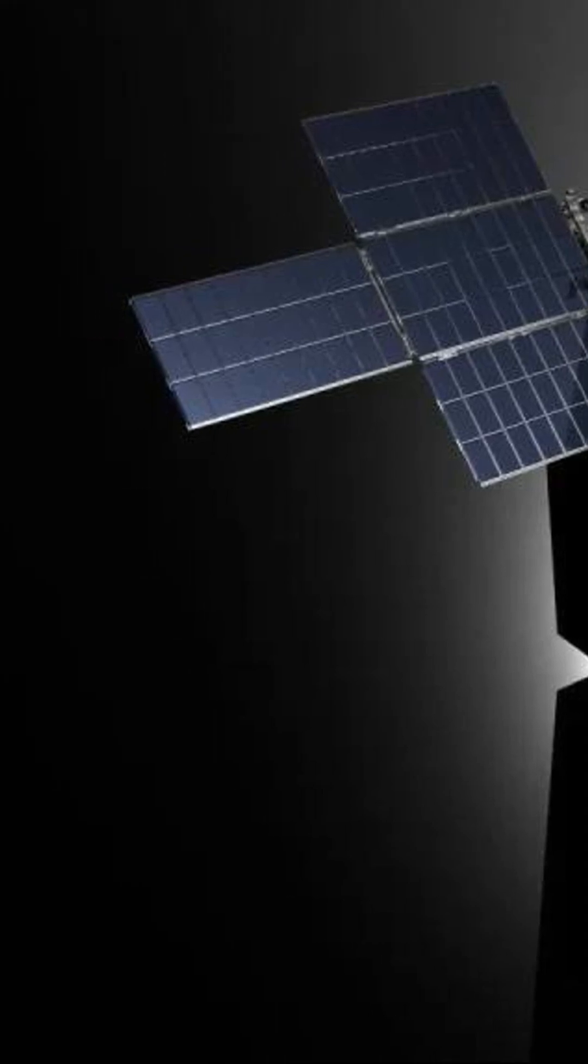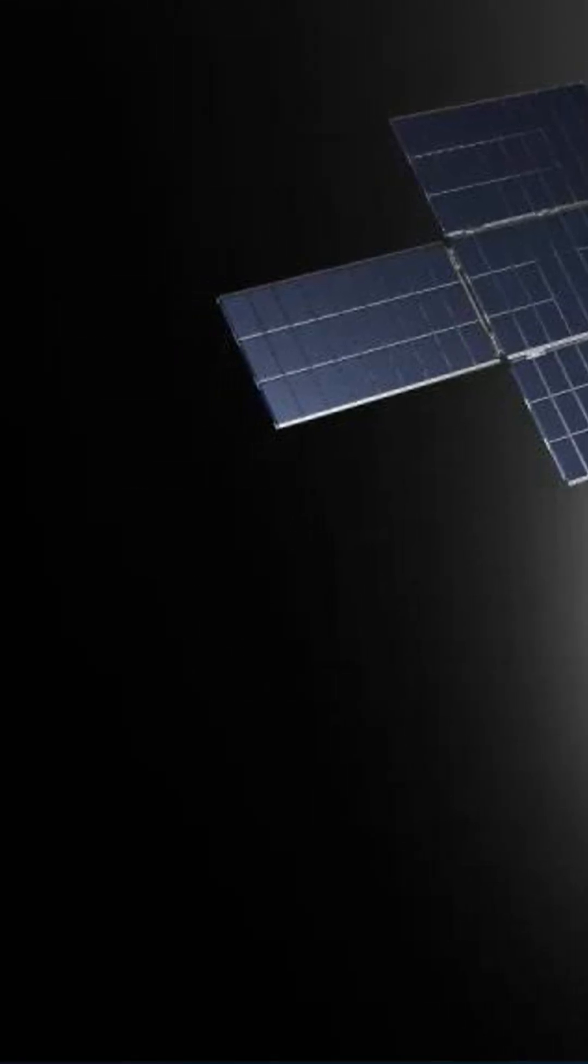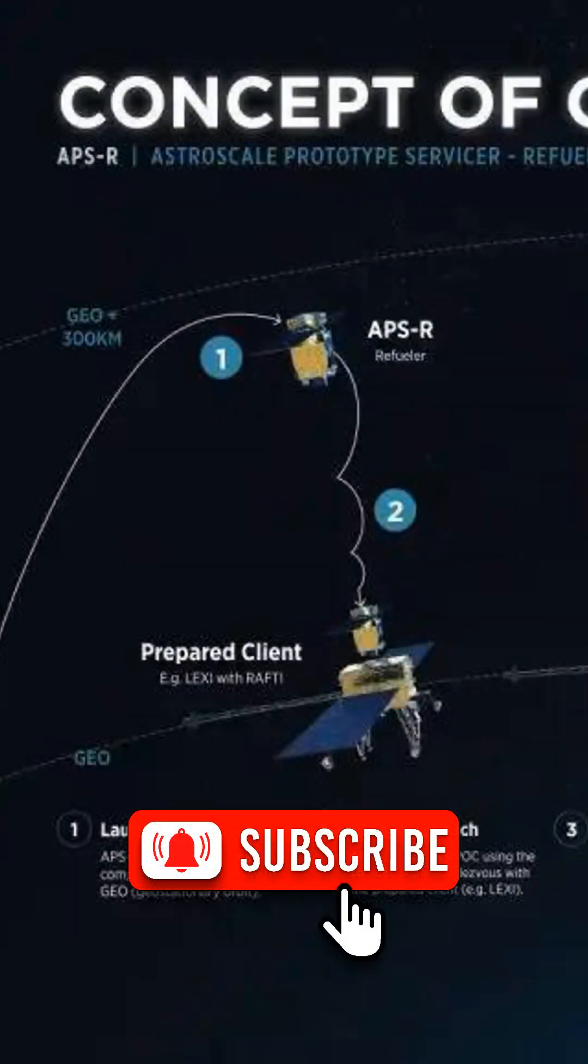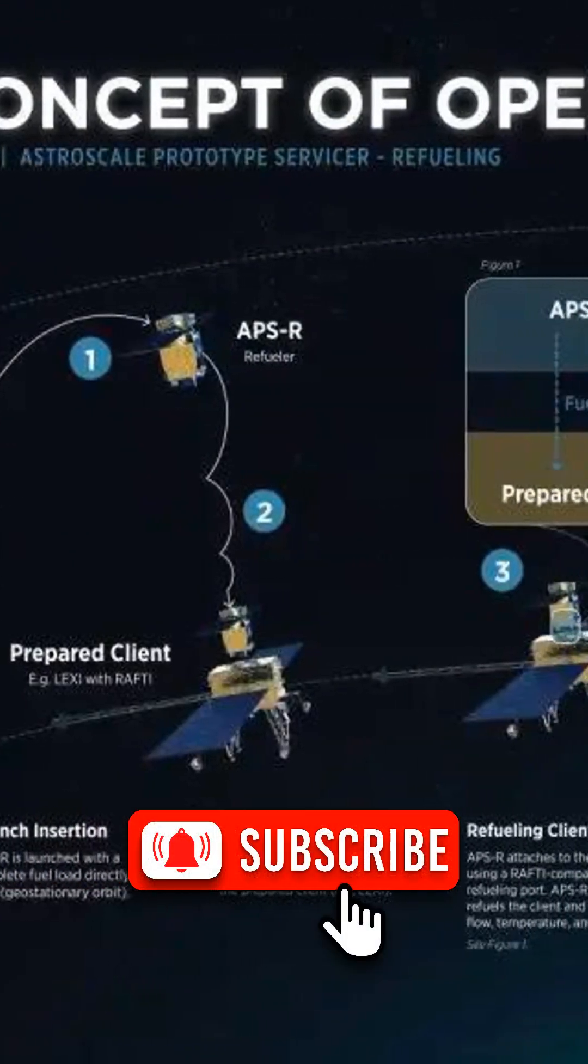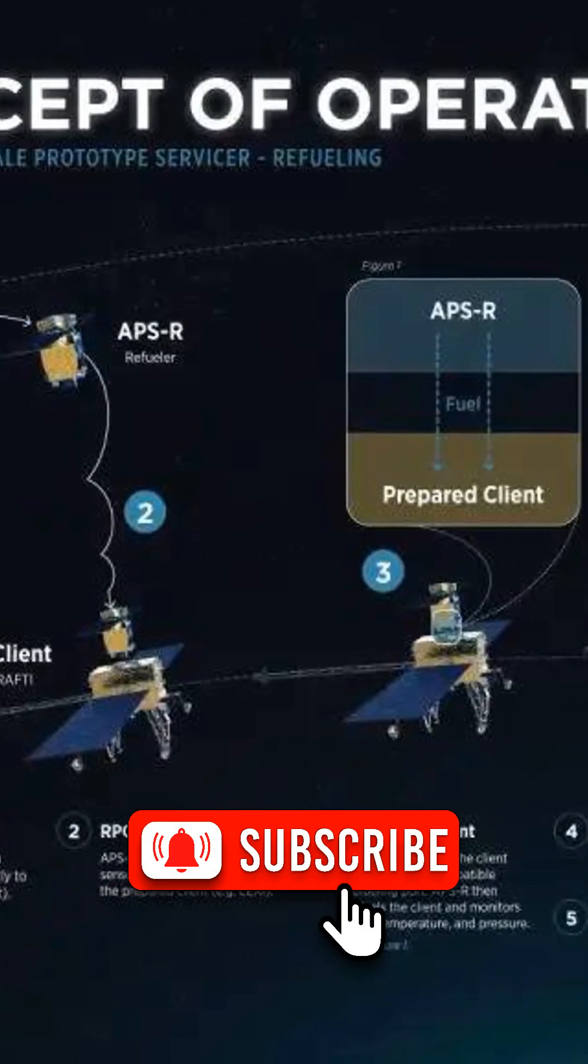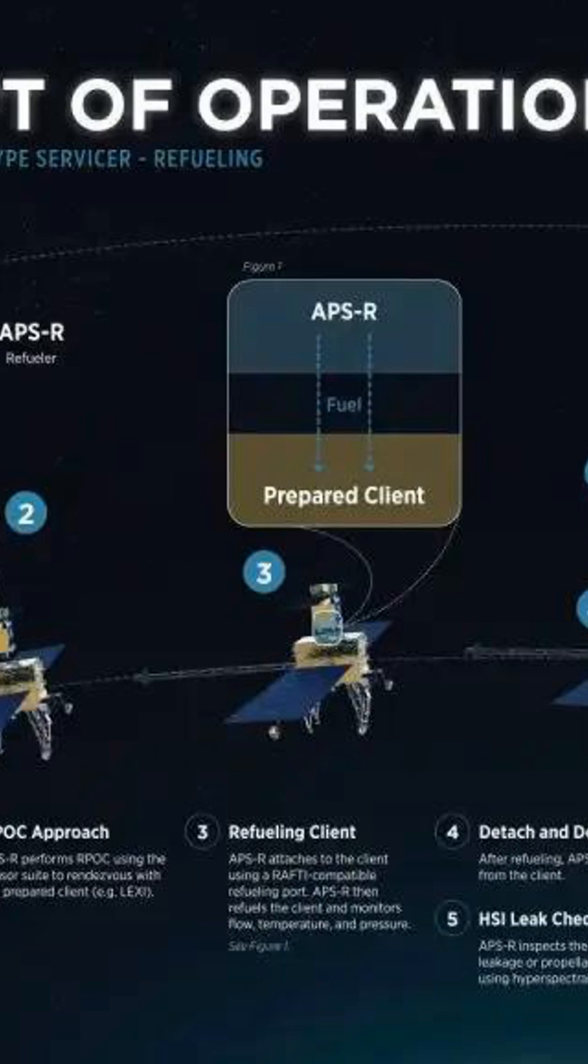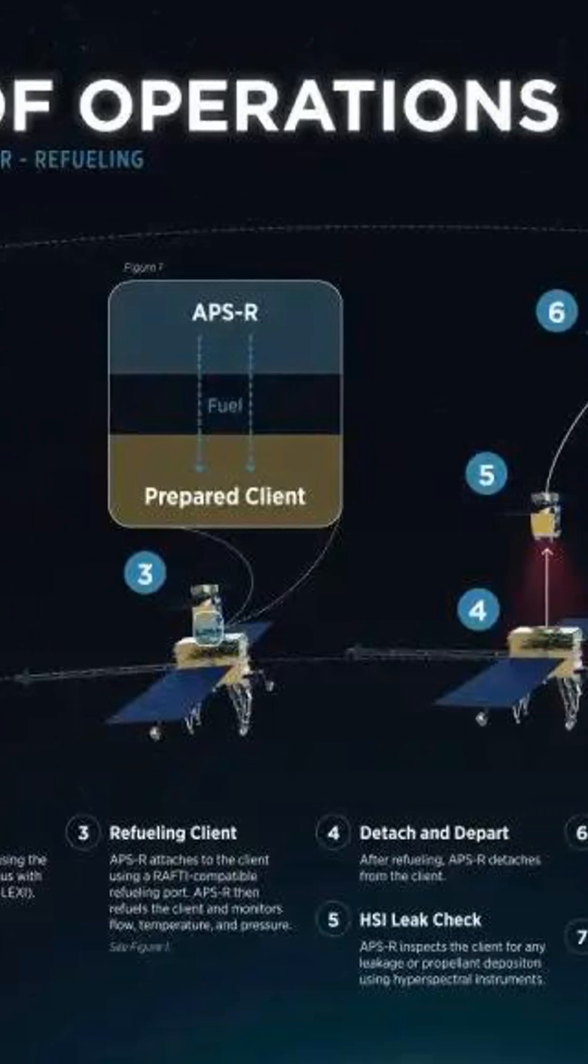A year later, TETRA-6 will take off. Its primary objective is to test the PRM module designed by Northrop Grumman. This module will attempt to dock with the Rooster-5 orbital tanker, which is based on the ESPA-STAR-D platform.